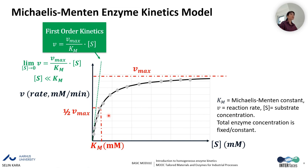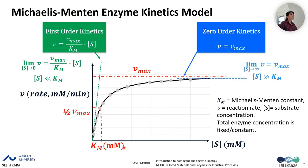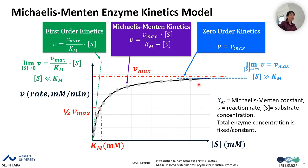The first region is the first-order kinetics region, where the reaction rate is linearly dependent on substrate concentration. The last part of the graph is the zero-order kinetics region, where the reaction rate is close to the maximum reaction rate. In between, we have the Michaelis-Menten kinetics region, defined by the Michaelis-Menten equation.